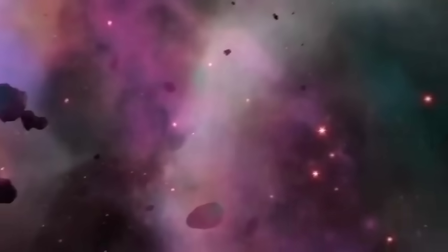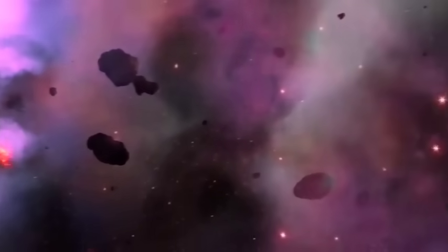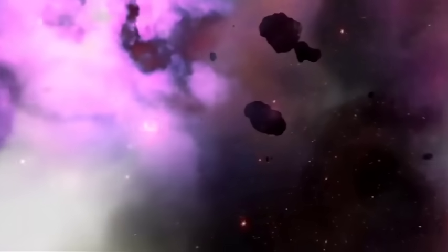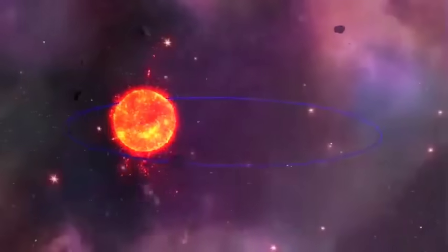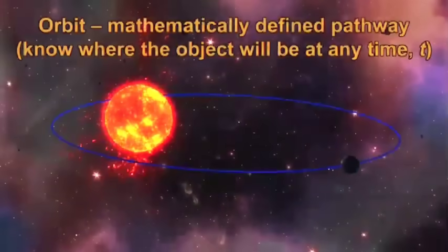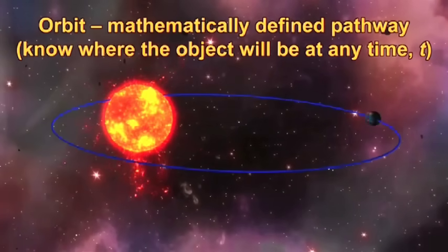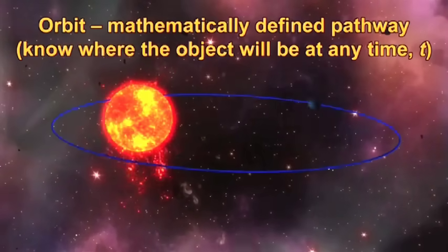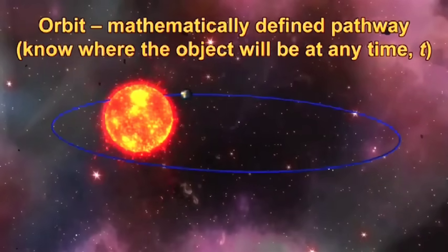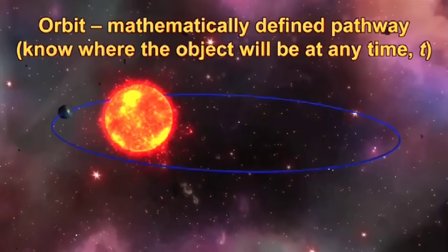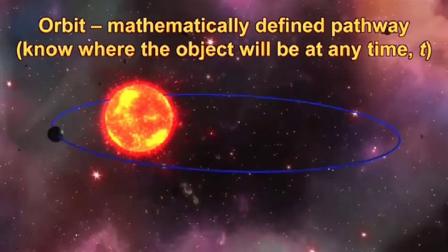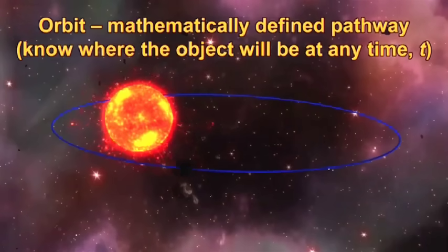One of the great results of quantum mechanics was the orbital, which is where the electrons reside. An orbital should never be confused with an orbit. An orbit is a mathematically defined pathway — for example, how the Earth orbits the Sun. Using classical Newtonian physics, we can predict where the Earth will be on the orbit at some time t, and where it was at some time t.